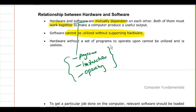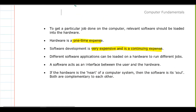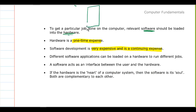Hardware and software are mutually dependent on each other. Both must work together to make a computer produce a useful output. Software cannot be utilized without the supporting hardware, and hardware cannot do anything without software. To get a particular job done on the computer, the relevant software should be loaded onto the hardware.